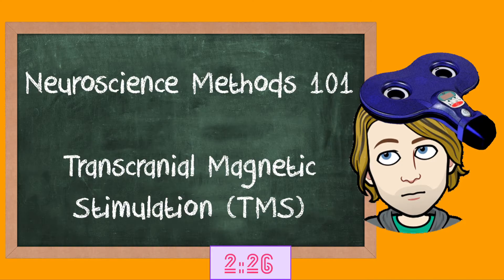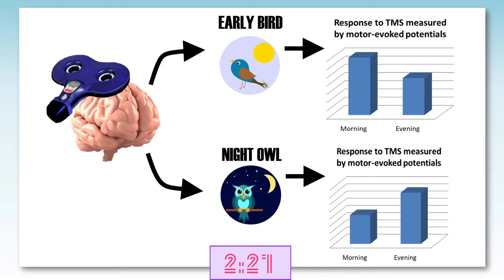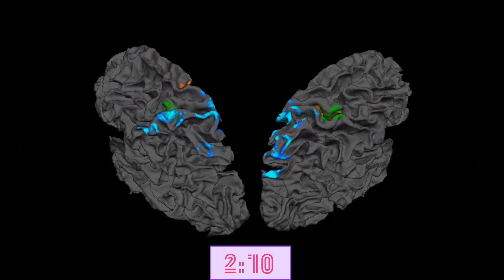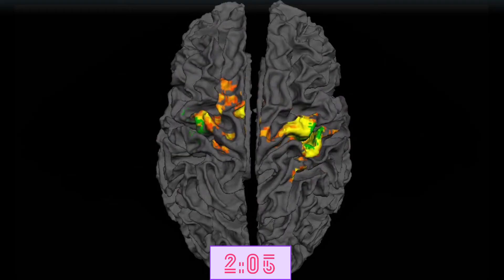So Salahinejad and colleagues found that someone who identifies as a morning person shows a larger response to TMS in the morning. On the other hand, an evening person had larger responses in the evening. This suggests that the brain is more active at a person's preferred time, making it easier to stimulate the brain from the outside.